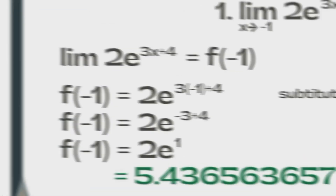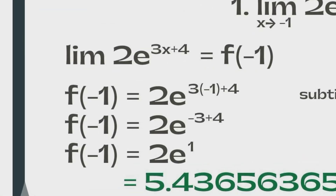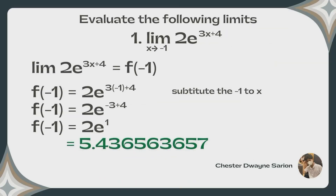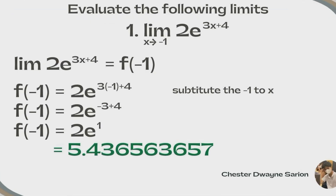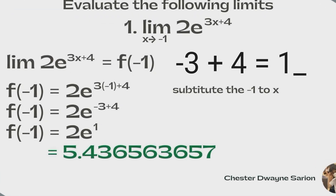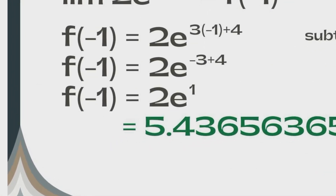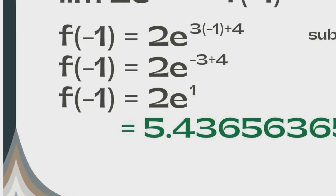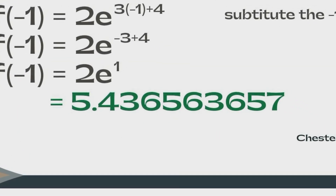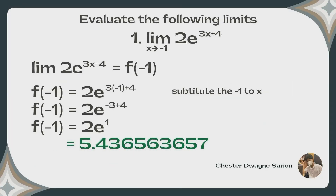Then we will get 2e raised to the power of 3 times negative 1 plus 4. Simplify the exponent: 2e raised to negative 3 plus 4. Negative 3 plus 4 equals 1. Then simplify the term: 2e raised to 1. Using a calculator, it equals 5.436563657. Therefore, the limit of 2e raised to 3x plus 4 as x approaches negative 1 is 5.436563657.